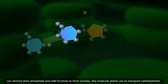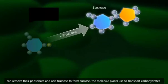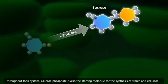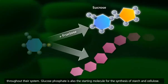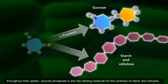These molecules can remove their phosphate and add fructose to form sucrose, the molecule plants use to transport carbohydrates throughout their system. Glucose phosphate is also the starting molecule for the synthesis of starch and cellulose.